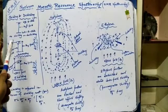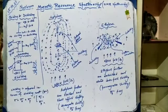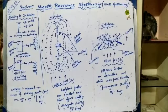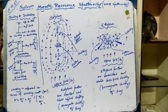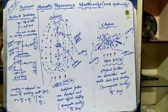These protons are called deshielded protons, as the magnetic lines of force — the induced field — are working in the same direction as the required field. So a lesser amount of applied field is required to flip a proton. This is called downfield shifting. This type of proton is called a deshielded proton.